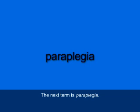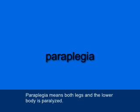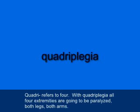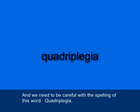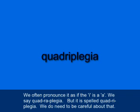The next term is paraplegia, P-A-R-A-P-L-E-G-I-A. Paraplegia means both legs and the lower body are paralyzed. Finally, we have quadriplegia — quadra refers to four — so with quadriplegia, all four extremities are paralyzed: both legs and both arms. We need to be careful of the spelling: quadriplegia is Q-U-A-D-R-I-P-L-E-G-I-A. We often pronounce it as if that I is an A, but it's spelled quadriplegia.